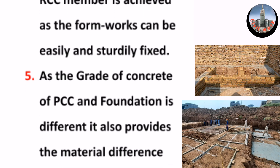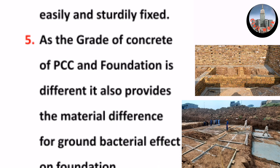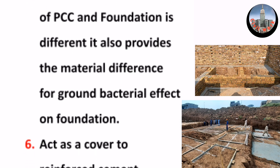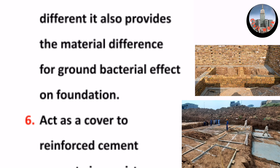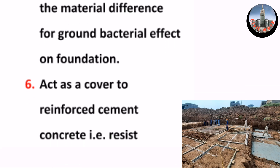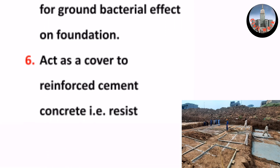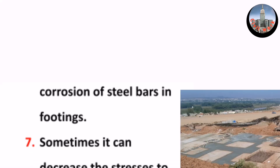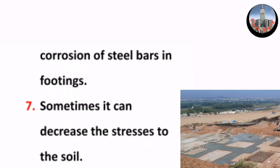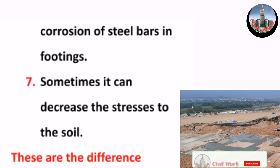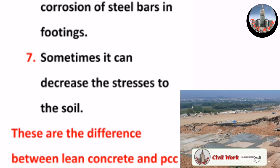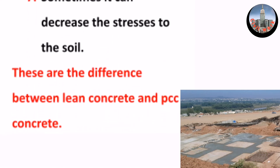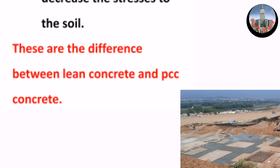Fourth, the effective depth of the RCC member is achieved as formwork can be easily and steadily fixed. Fifth, as the grade of PCC and foundation concrete is different, it also provides a material difference for ground bacterial effect on the foundation. Sixth, it acts as a cover to reinforce the cement concrete, resisting corrosion of steel bars in footings. Seventh, it can sometimes decrease the stresses on the soil. These are the differences between lean concrete and PCC concrete.